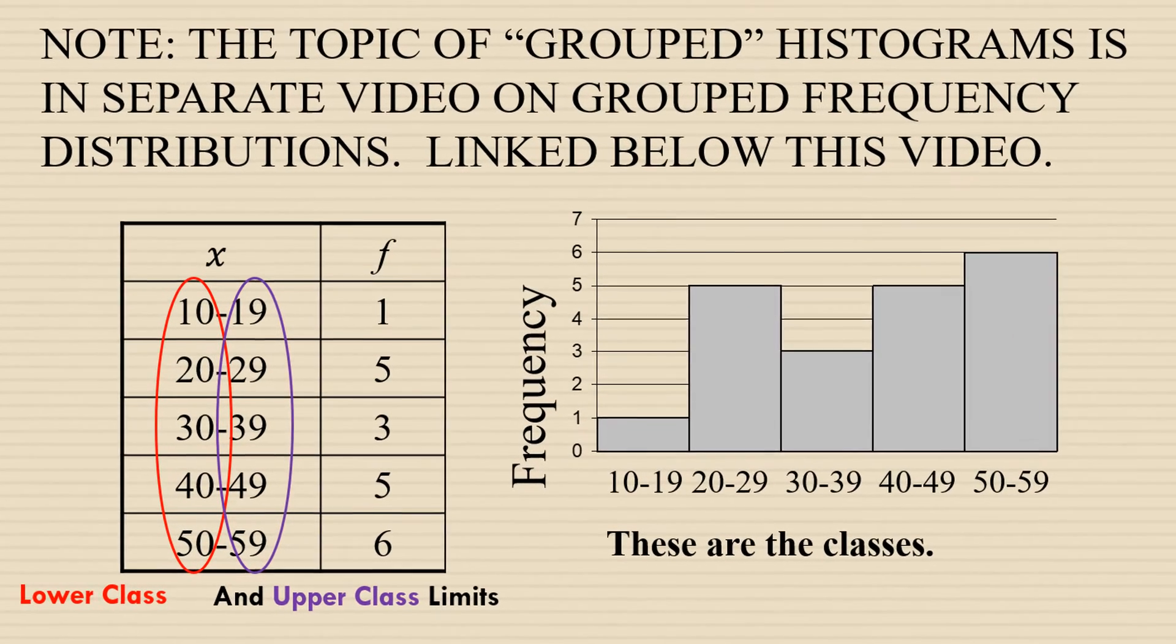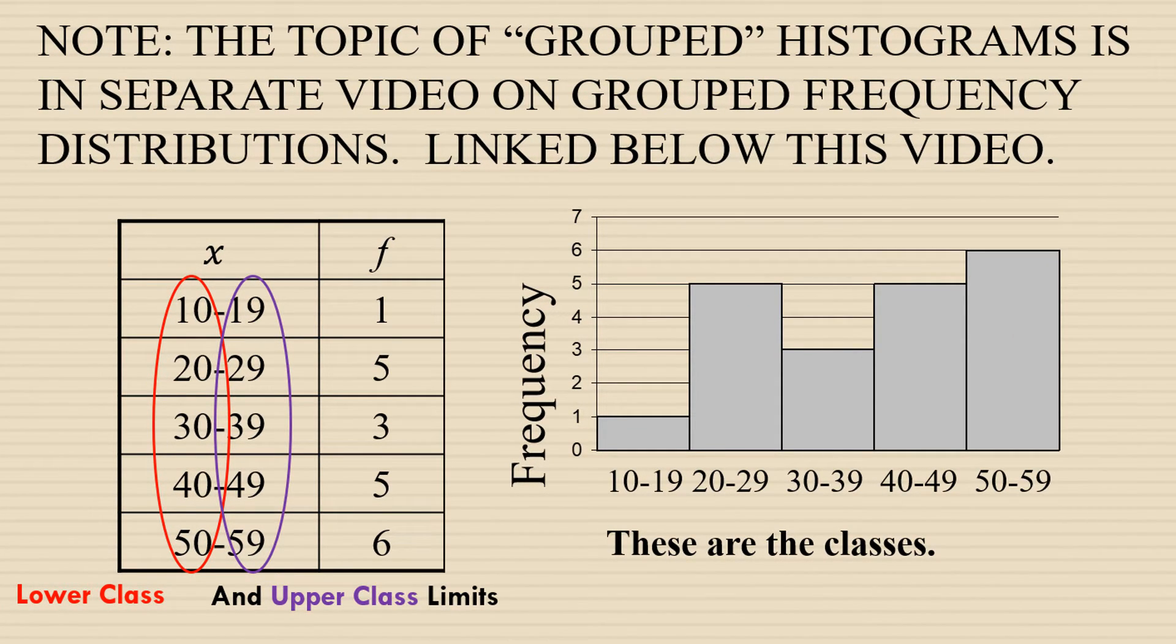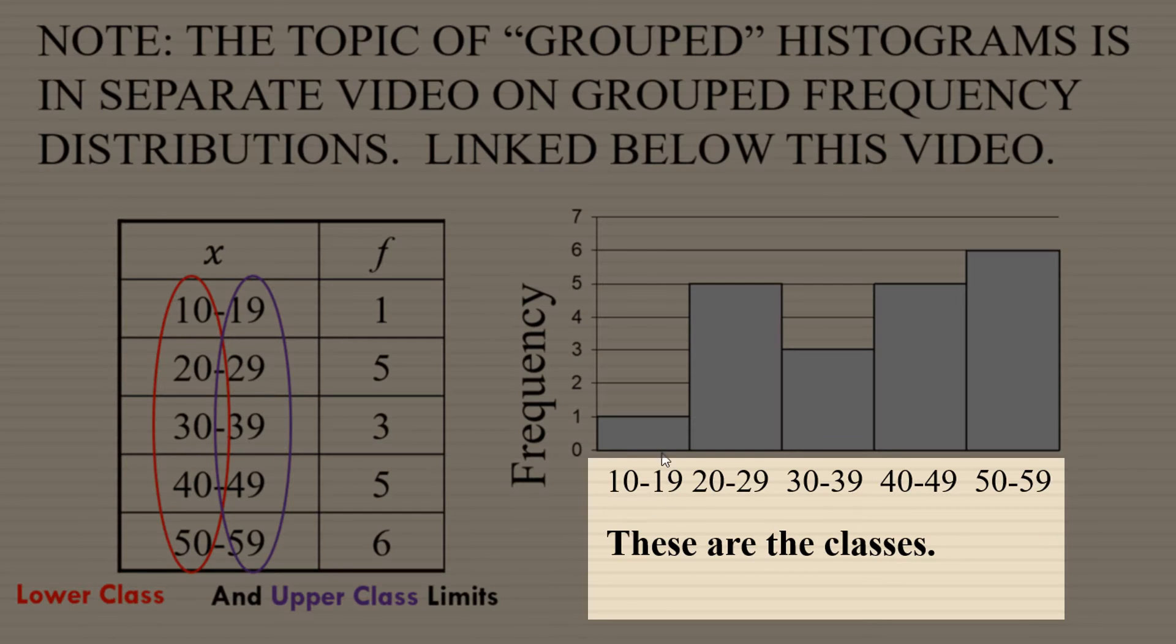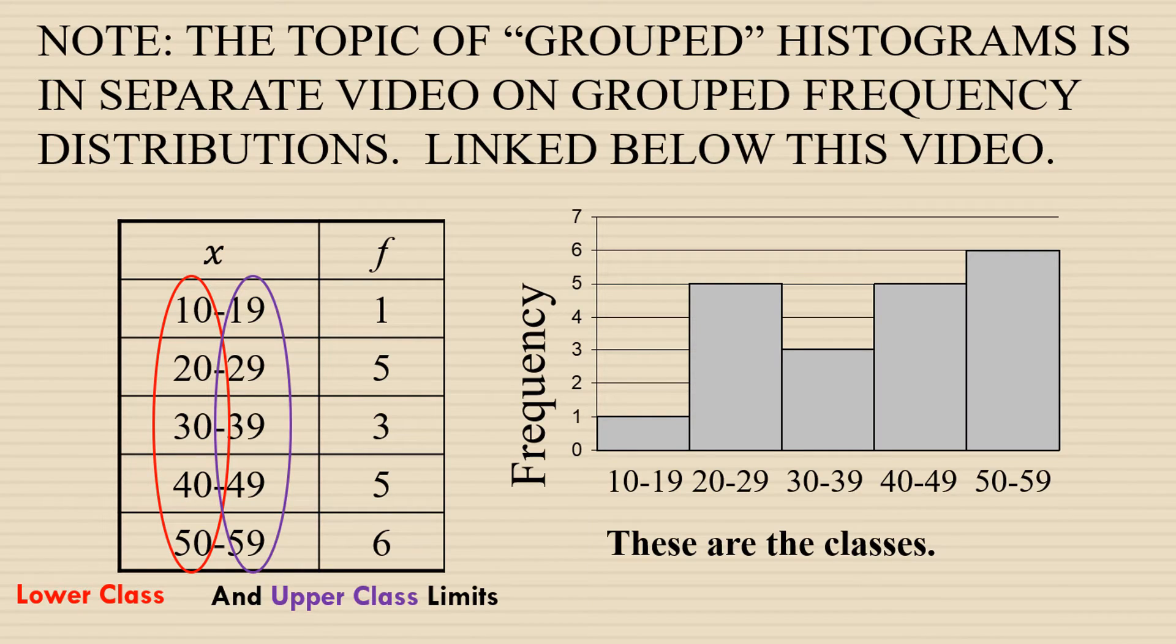There's also something called a grouped frequency histogram, which includes classes of data. Instead of each bar representing 1 particular value, it might be a span of values. Here we see classes 10 to 19, 20 to 29, 30 to 39, and so on. We will not be discussing grouped frequency histograms in this video, but we will in an upcoming video. The link to that video is down below.